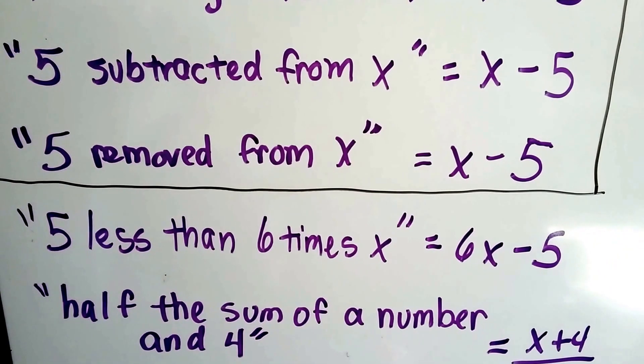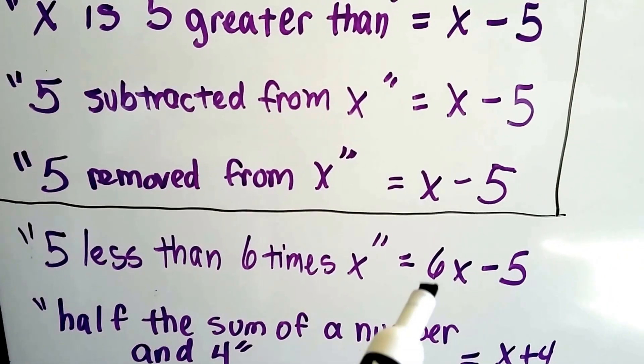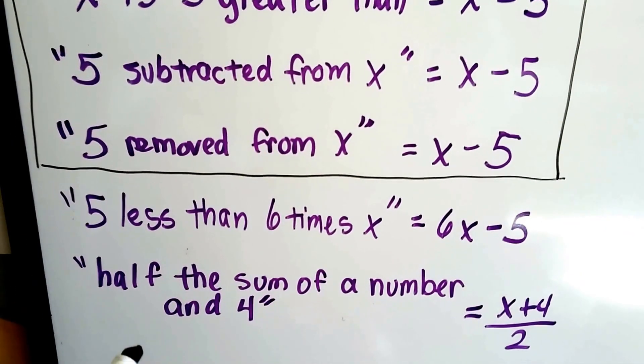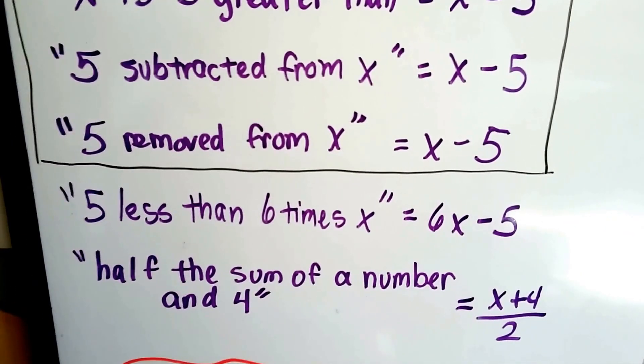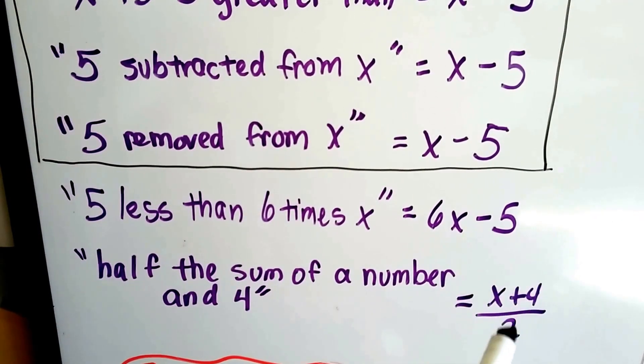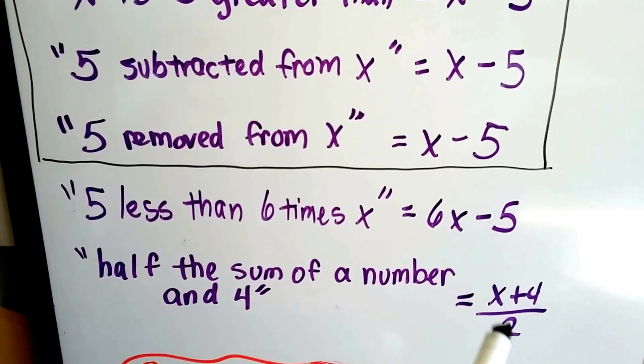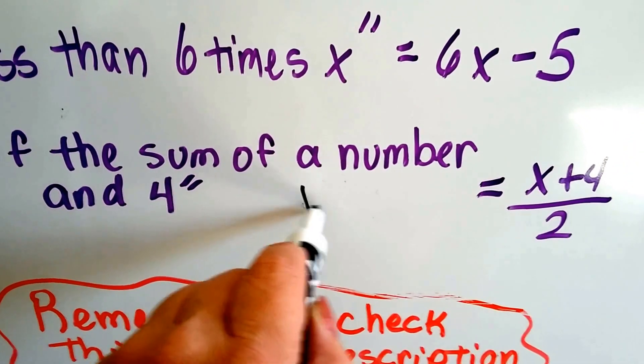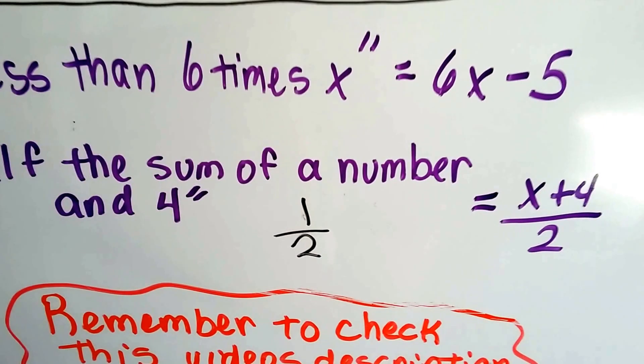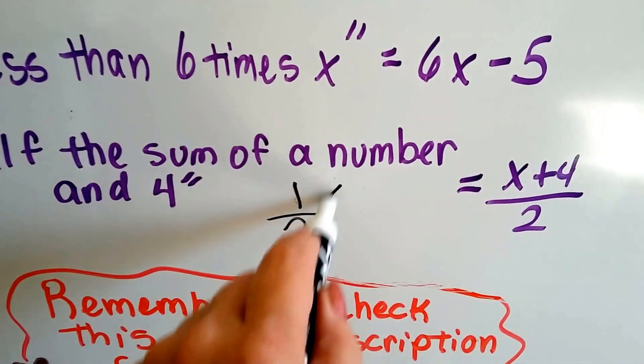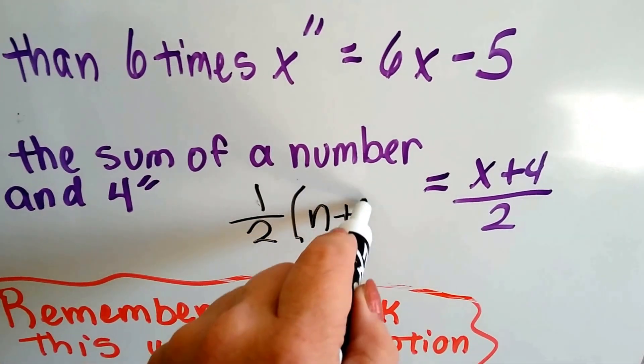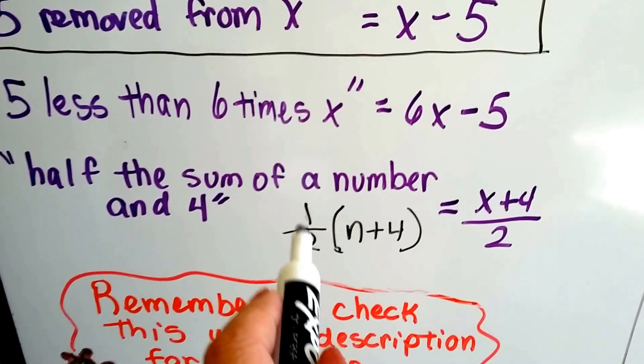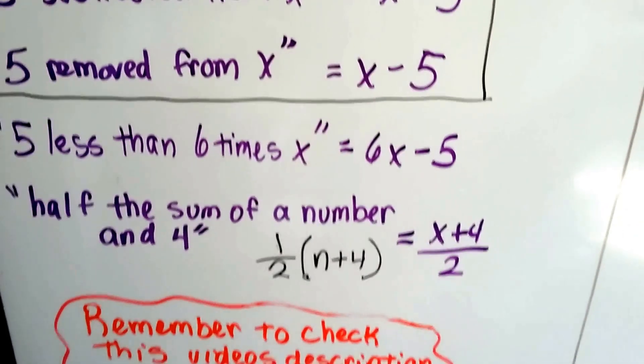If you see 5 less than 6 times x, we now put a 6 as a coefficient in front of that x minus 5. Half the sum of a number n 4 would be x plus 4 divided by 2. It could also be half times the number n plus 4. We could multiply the number plus 4 by a half. So either way, this way or this way, it could be half of it.